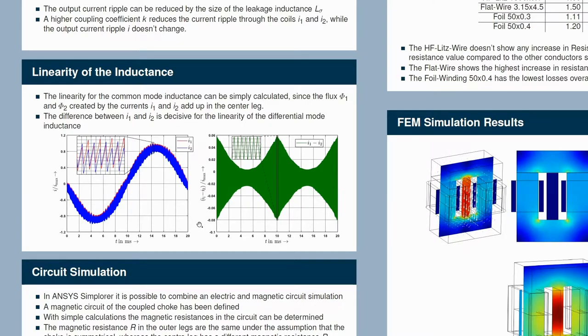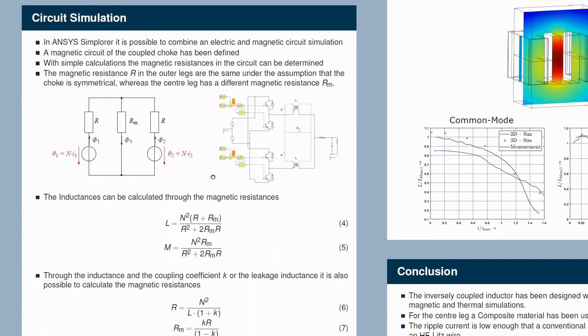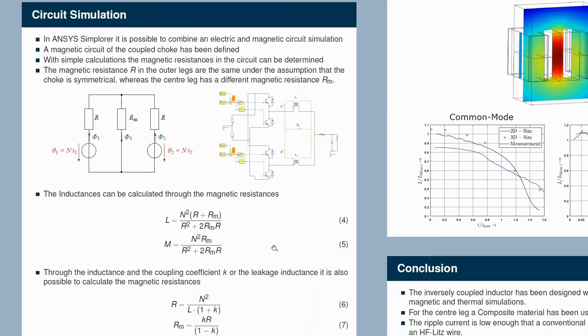The problem is that this difference changes when we change the coupling coefficient. A higher coupling coefficient reduces the difference I1 minus I2. And in order to calculate everything nice and easy, we made an ANSYS Simplorer simulation.